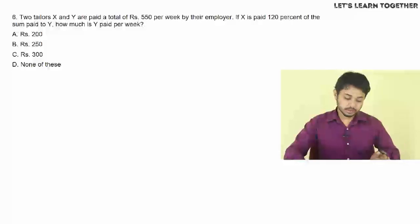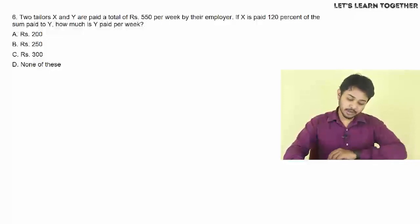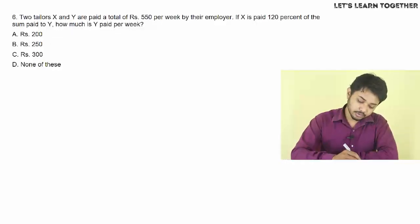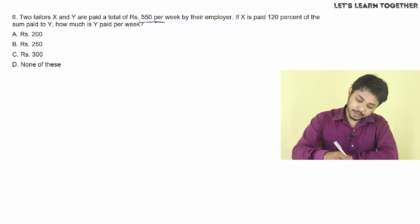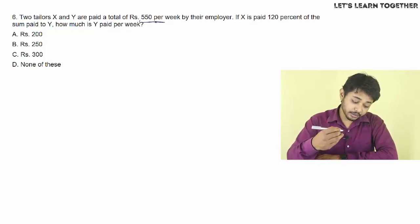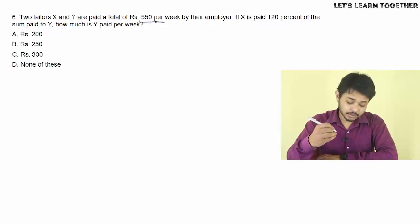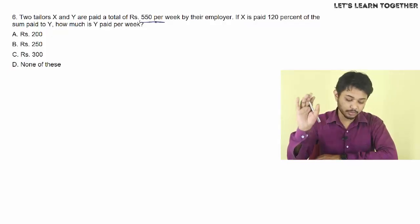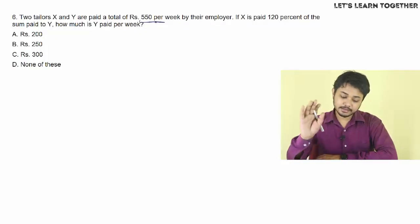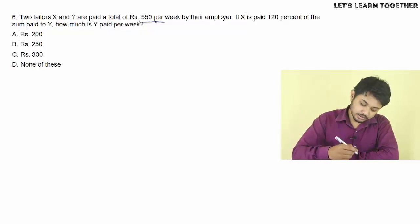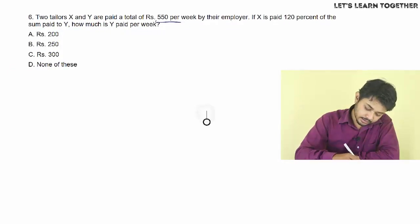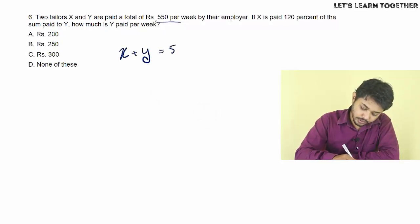Question number 6. Two tailors, X and Y, were paid a total of 550 per week by their employer. If X is paid 120% of the sum paid to Y, how much is Y paid per week? X plus Y is equal to 550.